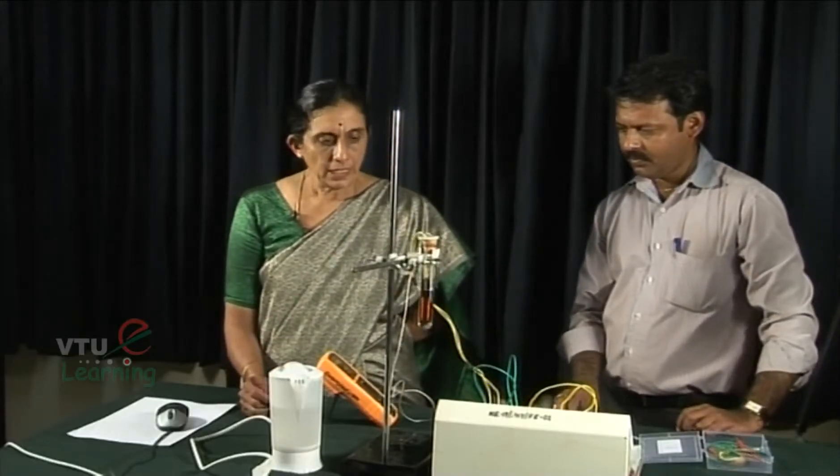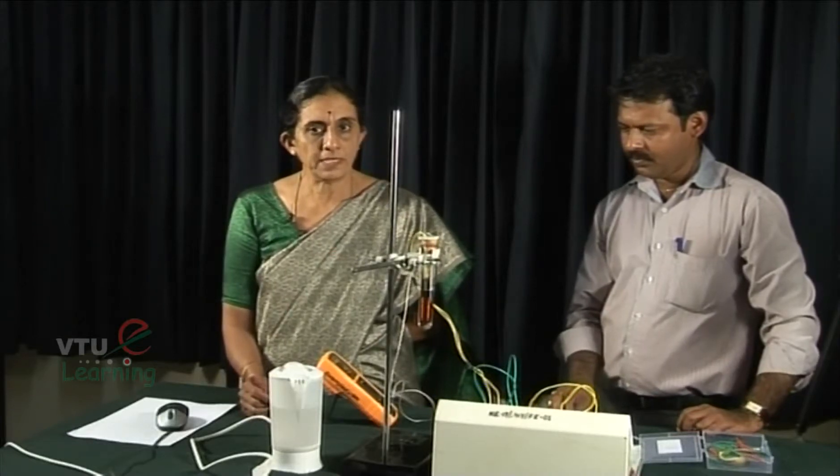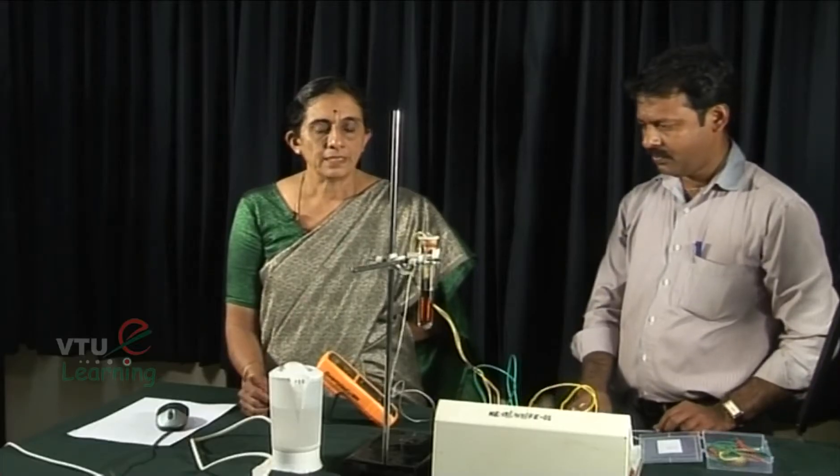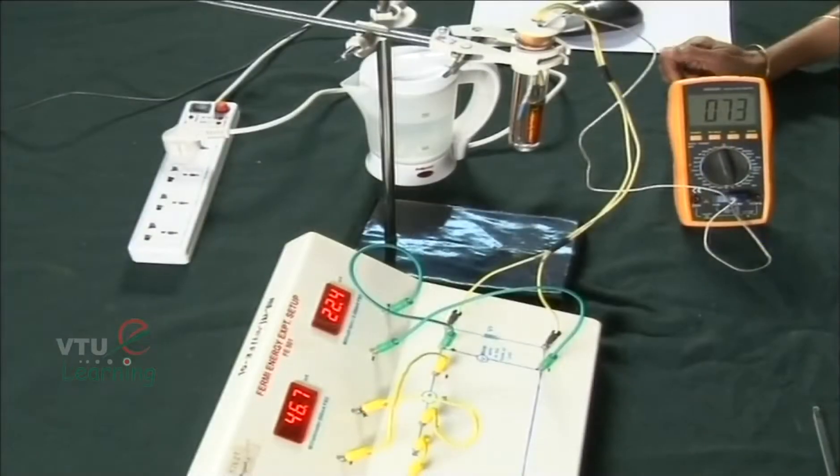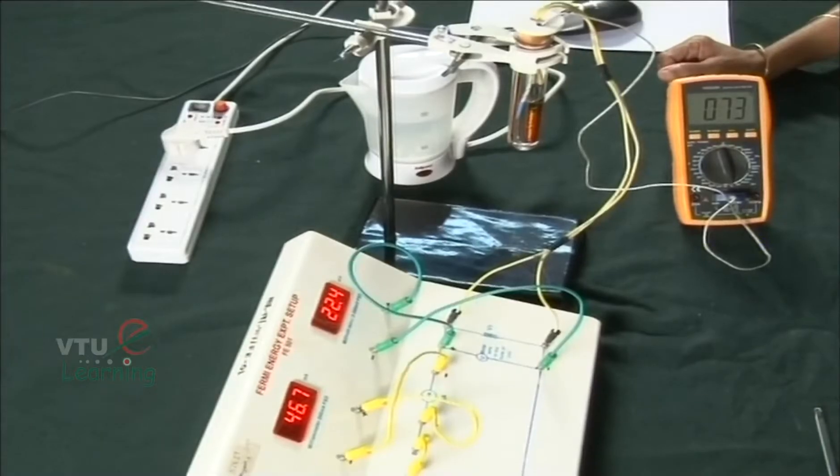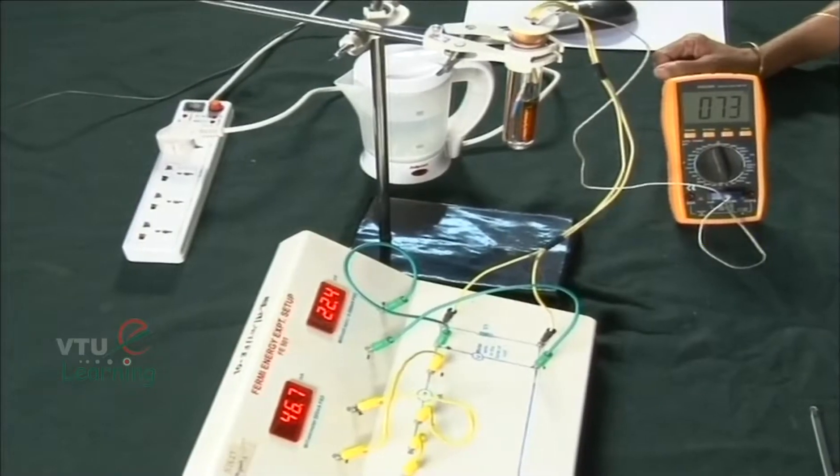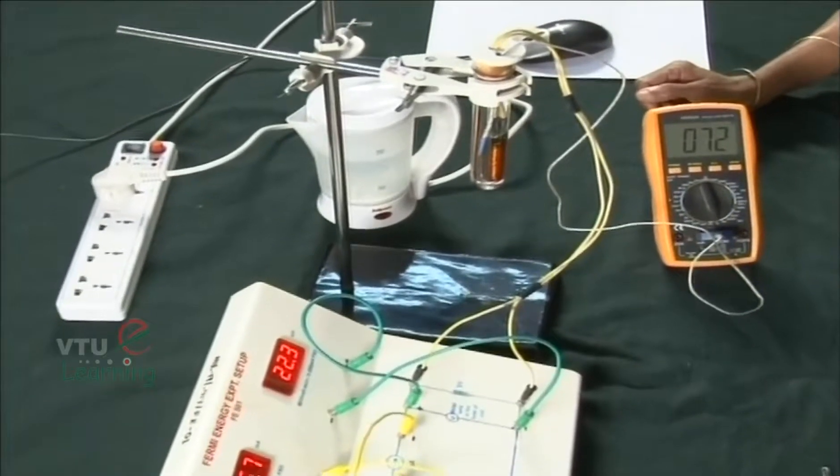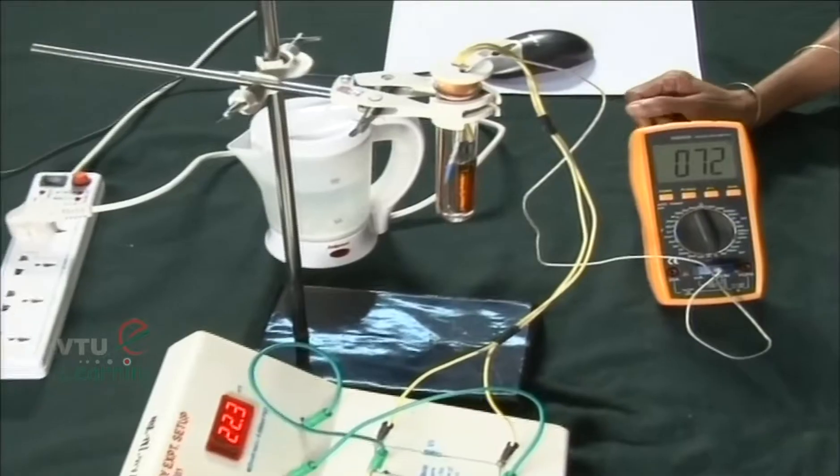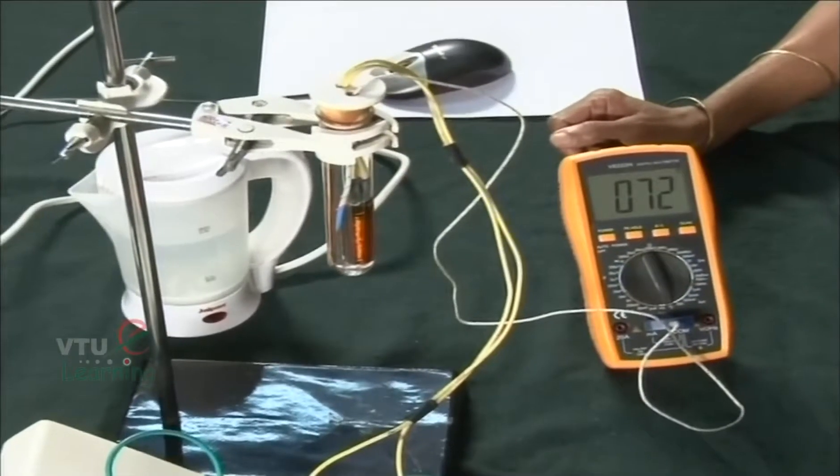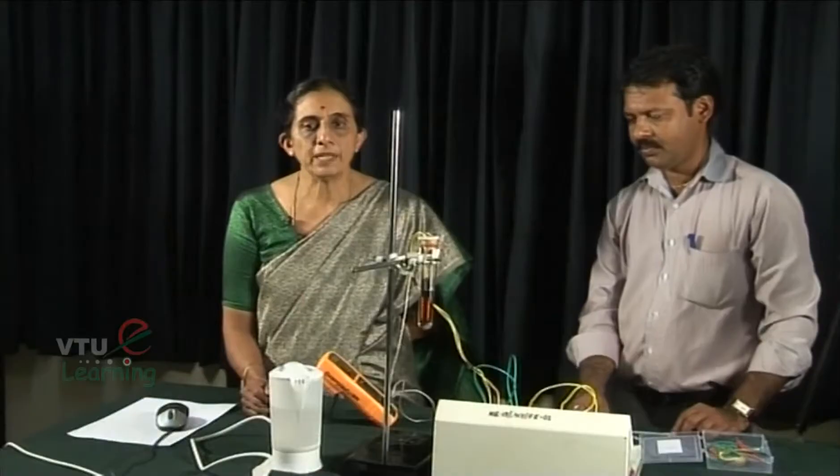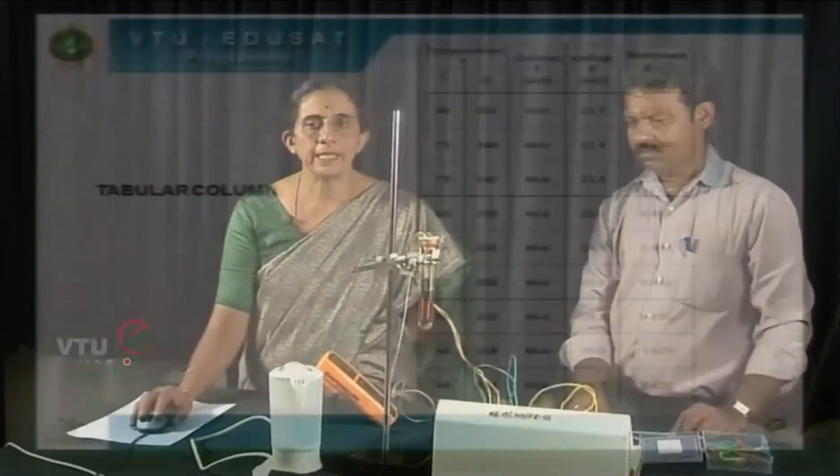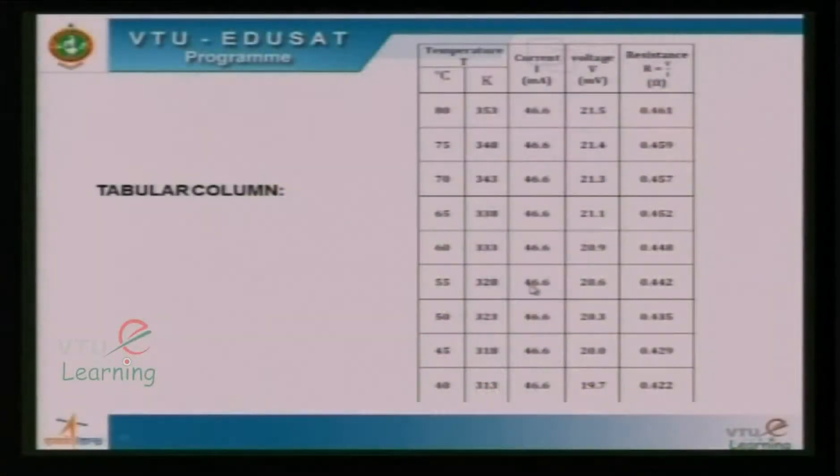Now we wait till the temperature climbs down to 75 degree centigrade. When it is 75, we record the reading and when once it touches 70, again we take the readings of milliammeter and the millivolt meter. Like this, we have to continue till the temperature has come down to 40 degree centigrade and we have recorded all the readings as indicated in this tabular column.